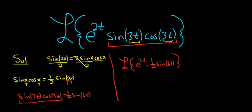So now we're in a better place, right? We can pull out the 1 half. So 1 half Laplace e to the 2t sine of 6t.